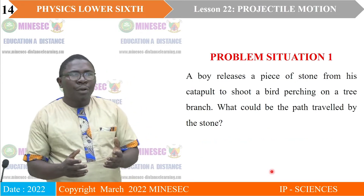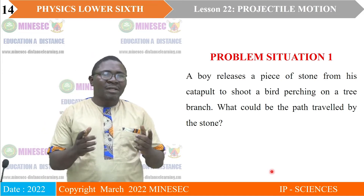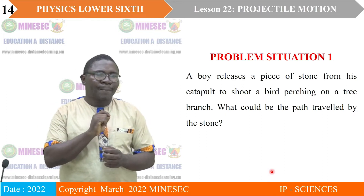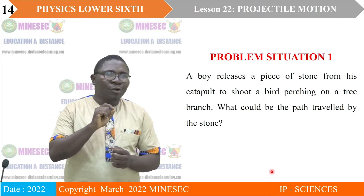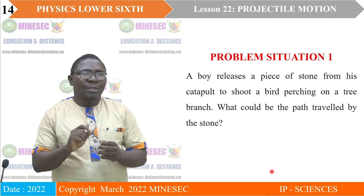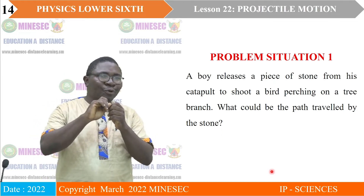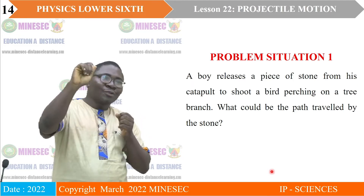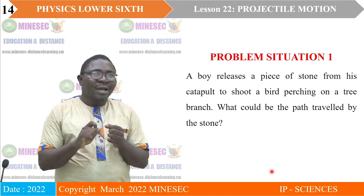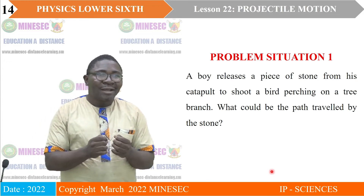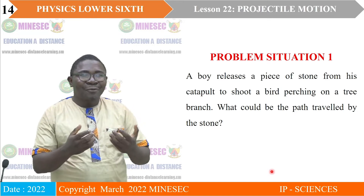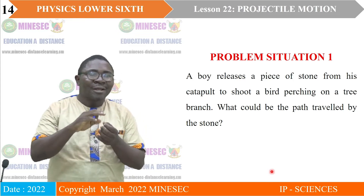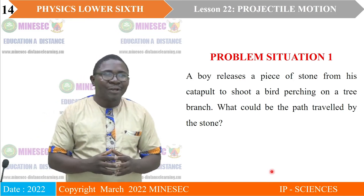Causing problem one: a boy releases a piece of stone from his catapult to shoot a bird perching on a tree branch. What could be the path traveled by the stone? If you used a catapult and shot a stone at a bird, how would you describe the particular path that stone took in order to hit that bird?